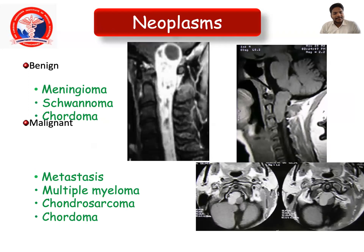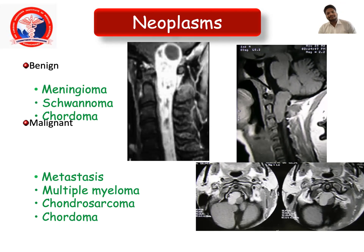Neoplasms include benign ones such as meningioma, schwannoma, or chordoma. Malignant lesions most commonly include metastasis, multiple myeloma, chordoma, or chondrosarcoma.